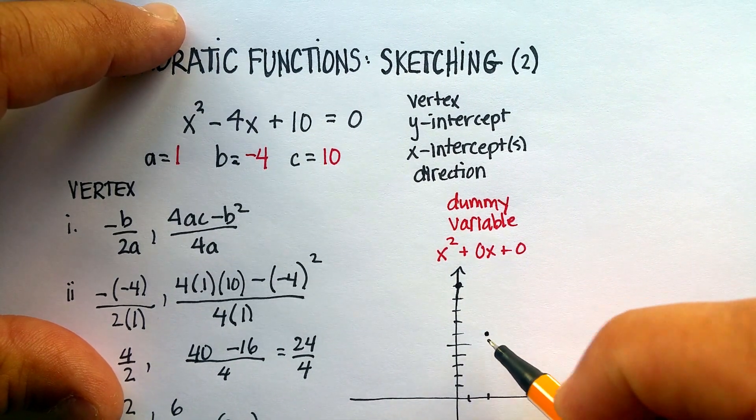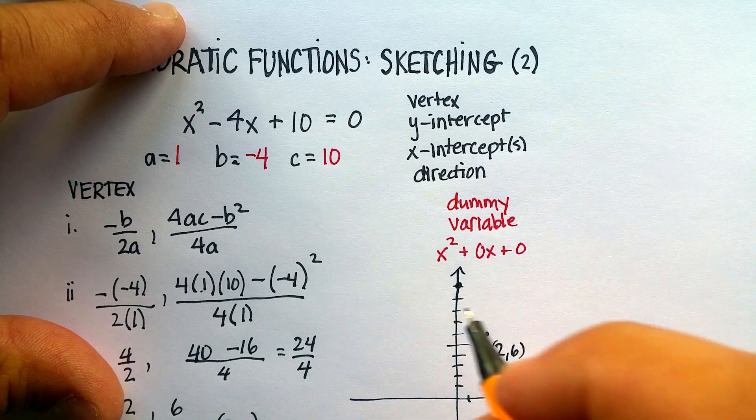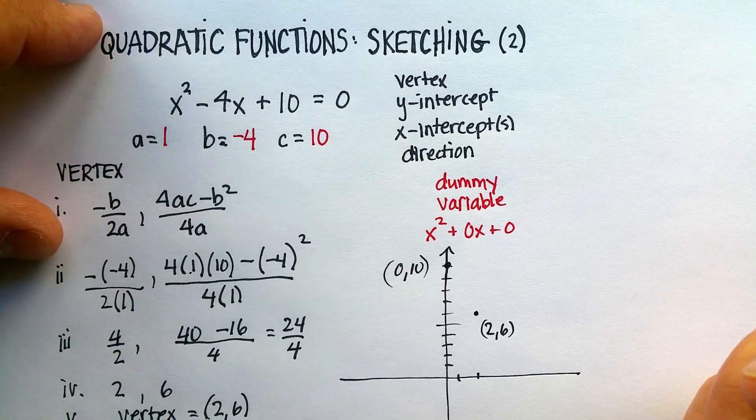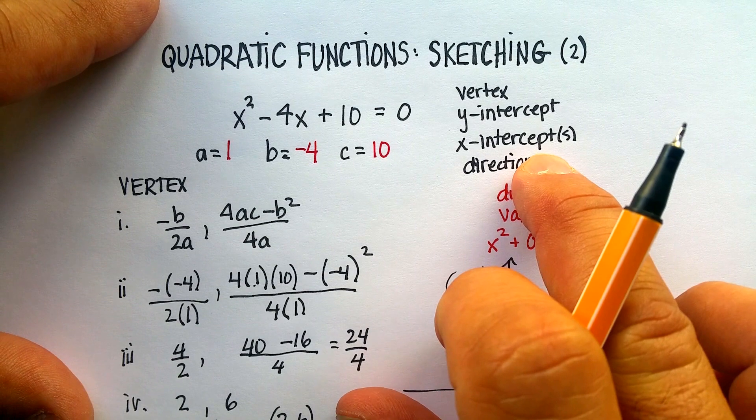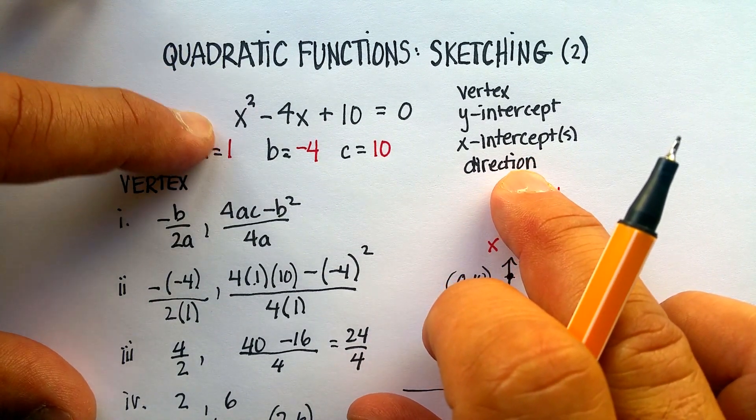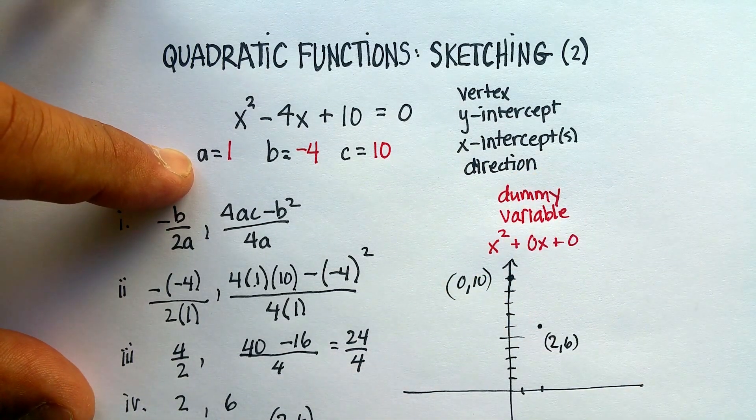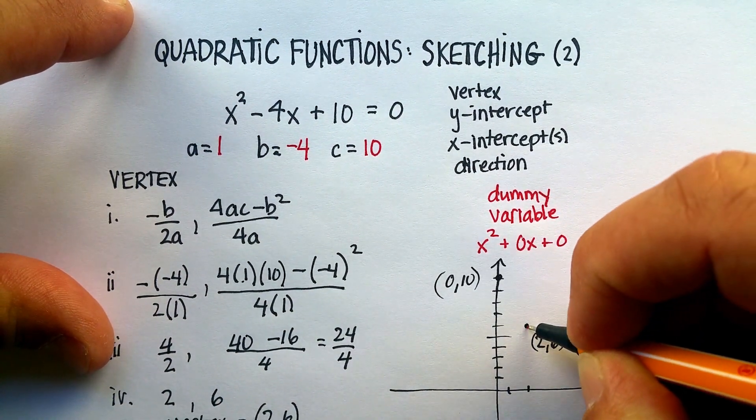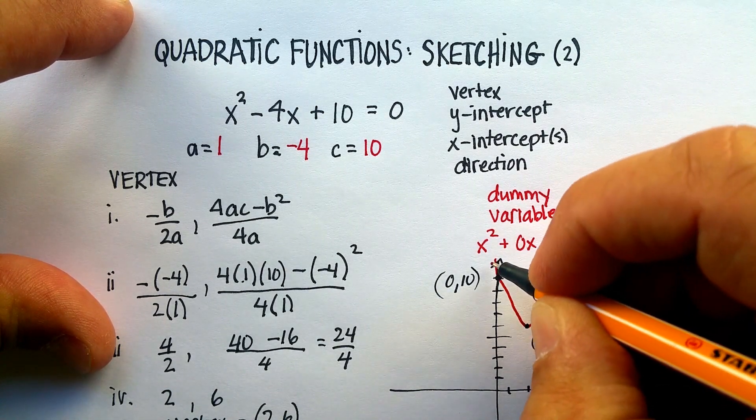I know that my direction, I'm going to skip x-intercept because I want you to see something. My direction is positive because my a is positive 1, so it's opening upward. Look what this does. My parabola is going to look something like that.